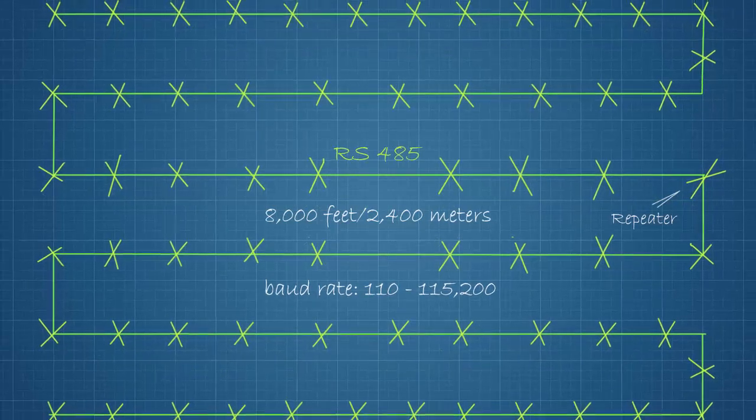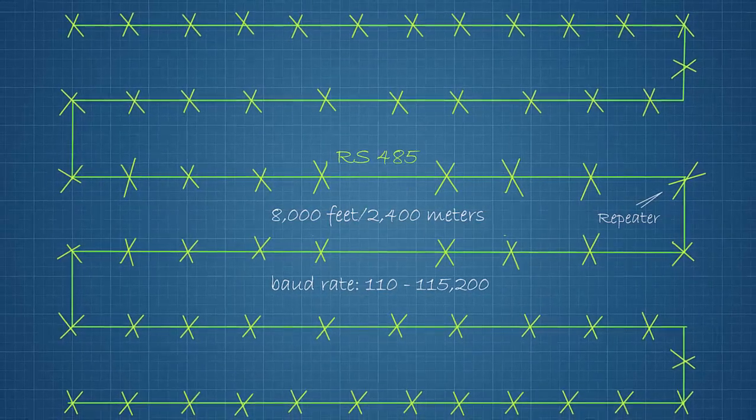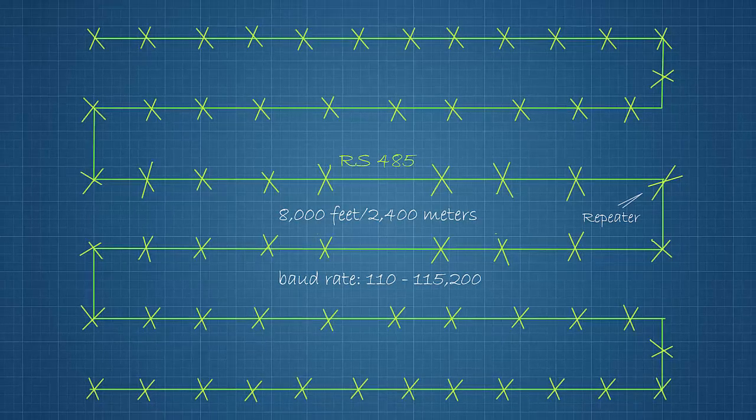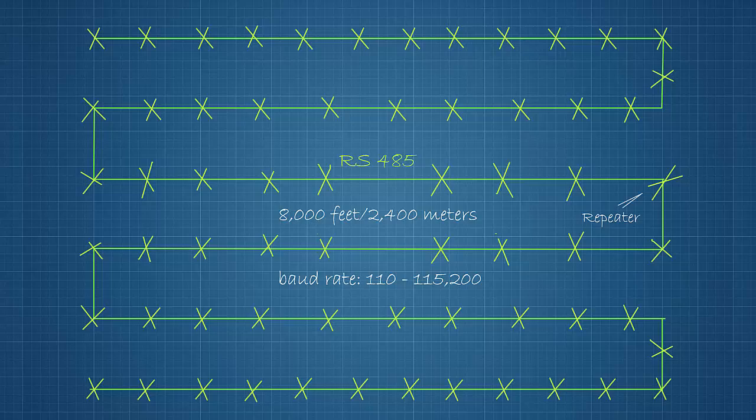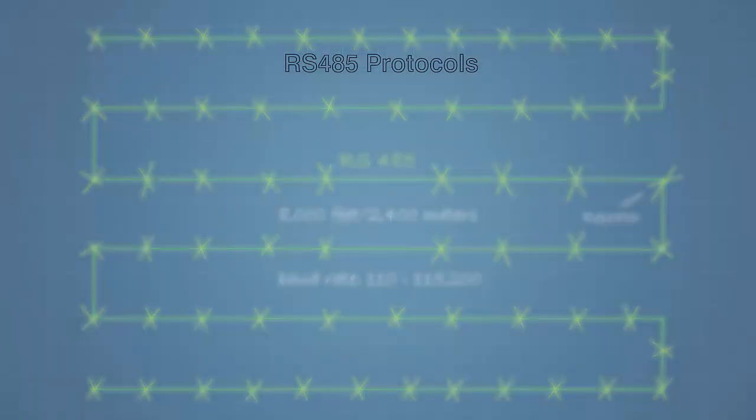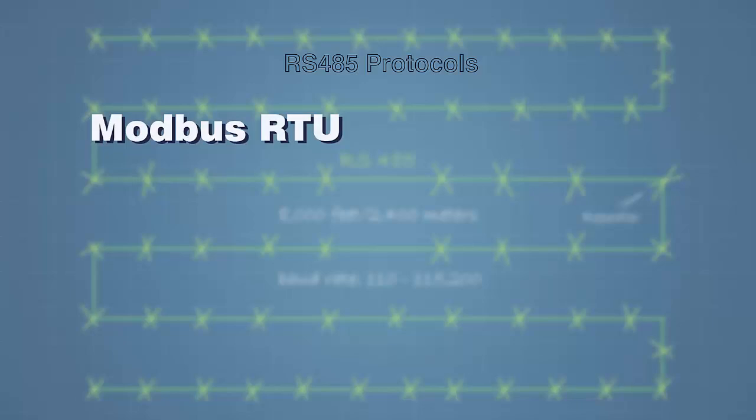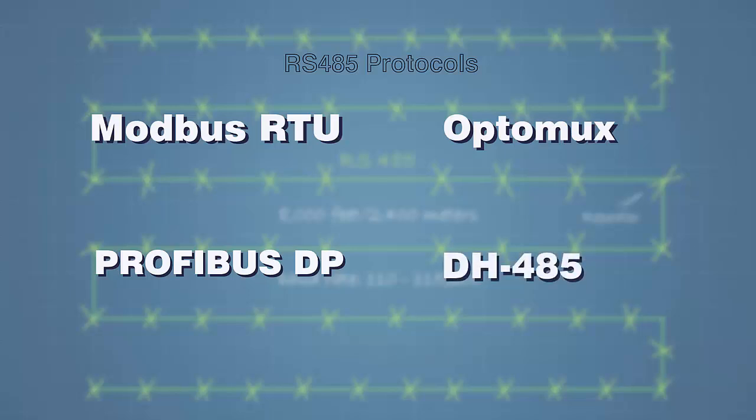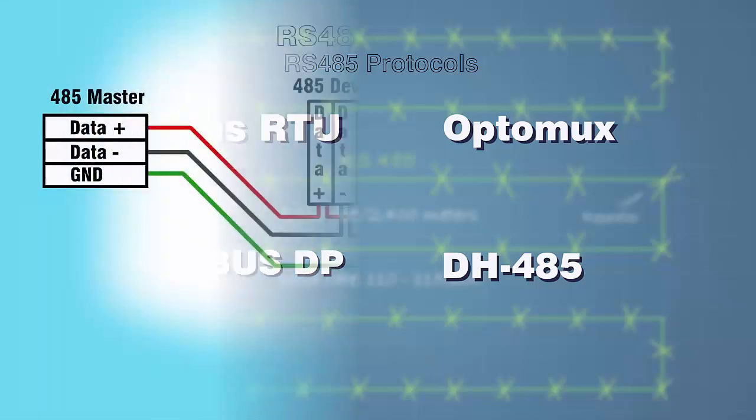The communication range can be extended even further with an RS-485 repeater. As a result, RS-485 has become the basis of the most commonly used industrial automation communication protocols, like Modbus RTU, Optimux, Profibus DP, and DH-485.